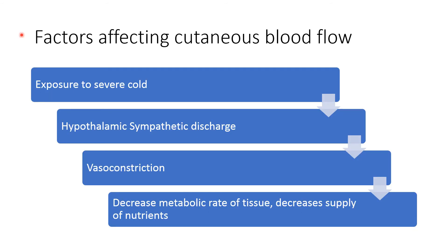Factors affecting cutaneous blood flow: exposure to cold stress activates the hypothalamic mechanism, increasing sympathetic discharge to the sympathetic vasoconstrictor nerves in skin vessels. This produces vasoconstriction, decreasing blood flow to the skin, decreasing the metabolic rate of tissue, and reducing nutrient supply to the skin.